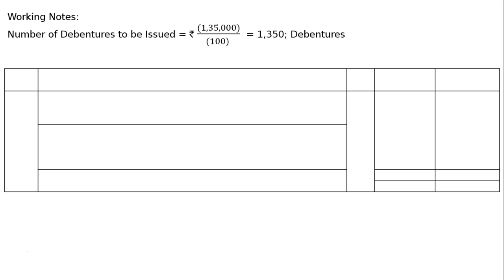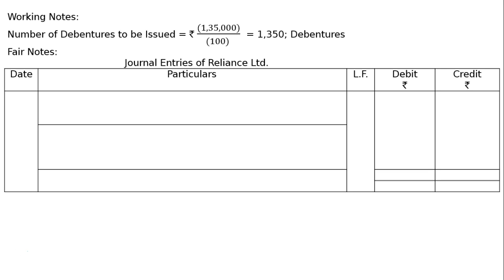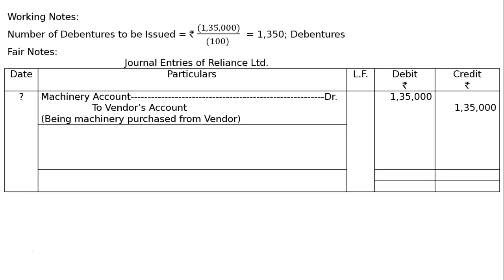Journal entries of Reliance Limited. Reliance Limited is the company buying machinery. First entry: Machinery Account debited to Vendor's Account. The name of the vendor is not given, so it is recorded as Vendor's Account. Amount will be Rs. 1,35,000 in both the debit and credit column, being machinery purchased from vendor.